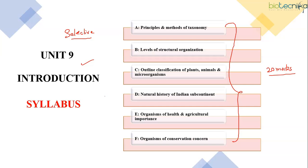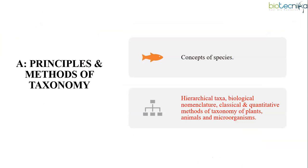Let's look at the important topics from this unit. Subunit A is about principles and methods of taxonomy. Here you study about biological, morphological and phylogenetic species concepts. You also study about hierarchical sequence for classifying living organisms, biological nomenclature, and classical and quantitative methods of taxonomy like phenetics, cladistics, simple matching coefficient, Jaccard coefficient, and many more.